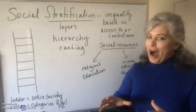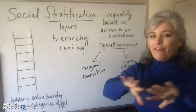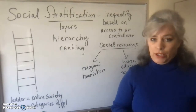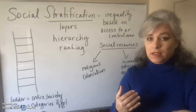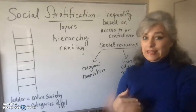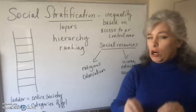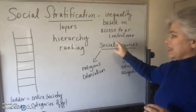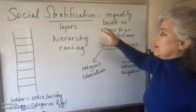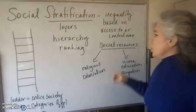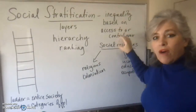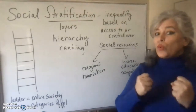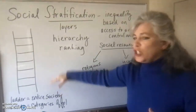In chapter seven, we're going to focus primarily on these achieved statuses and filter out some of the other things that affect social stratification — like the ascribed statuses we'll cover in chapters nine and ten. When you read the definition of social stratification at the beginning of chapter seven, you'll find something about access to or control of the resources that exist in society, and how that relationship affects a category of people's position on the social ladder.